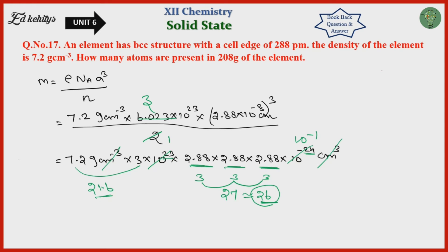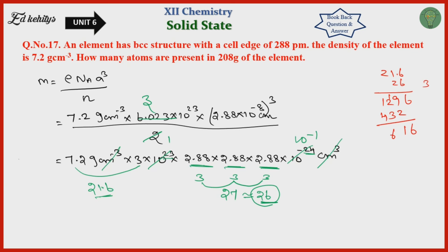Calculating step by step: 7.2 times 2 gives 21.6 × 26... multiplying through — 6, 36, remaining 3, 4, 6... working out the arithmetic gives us the molar mass. The result comes out to approximately 52 gram per mole.